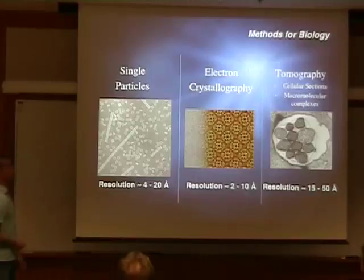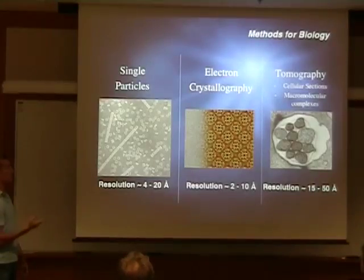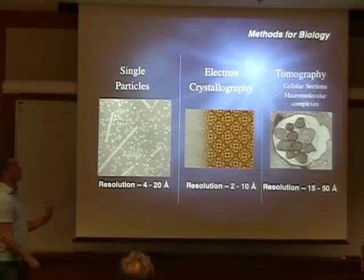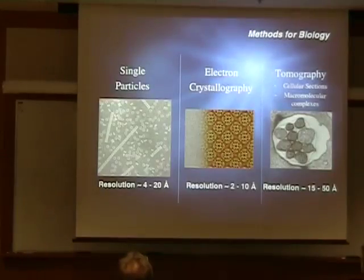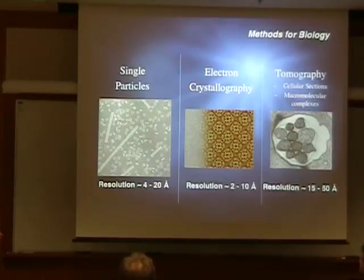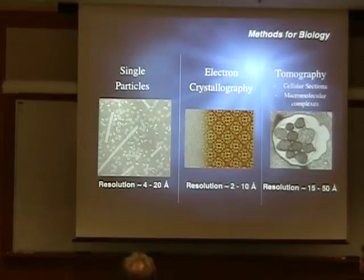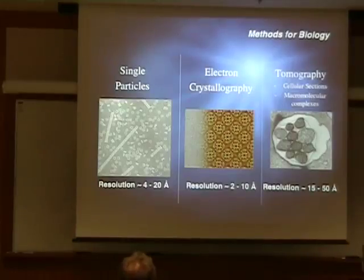We have three main areas that we do research in biology: single particles, electron crystallography, and tomography. Although our workshop is focused on electron crystallography, all of these techniques will probably benefit somewhat from CS correction, if it actually proves to be useful for biological samples.